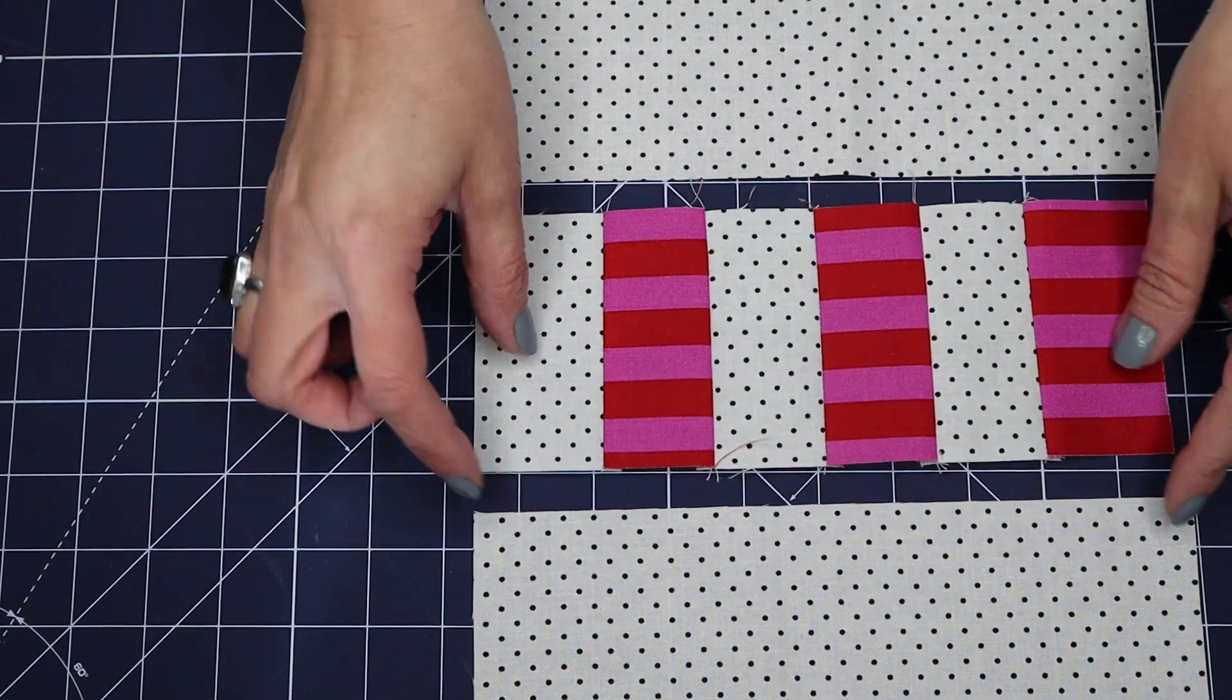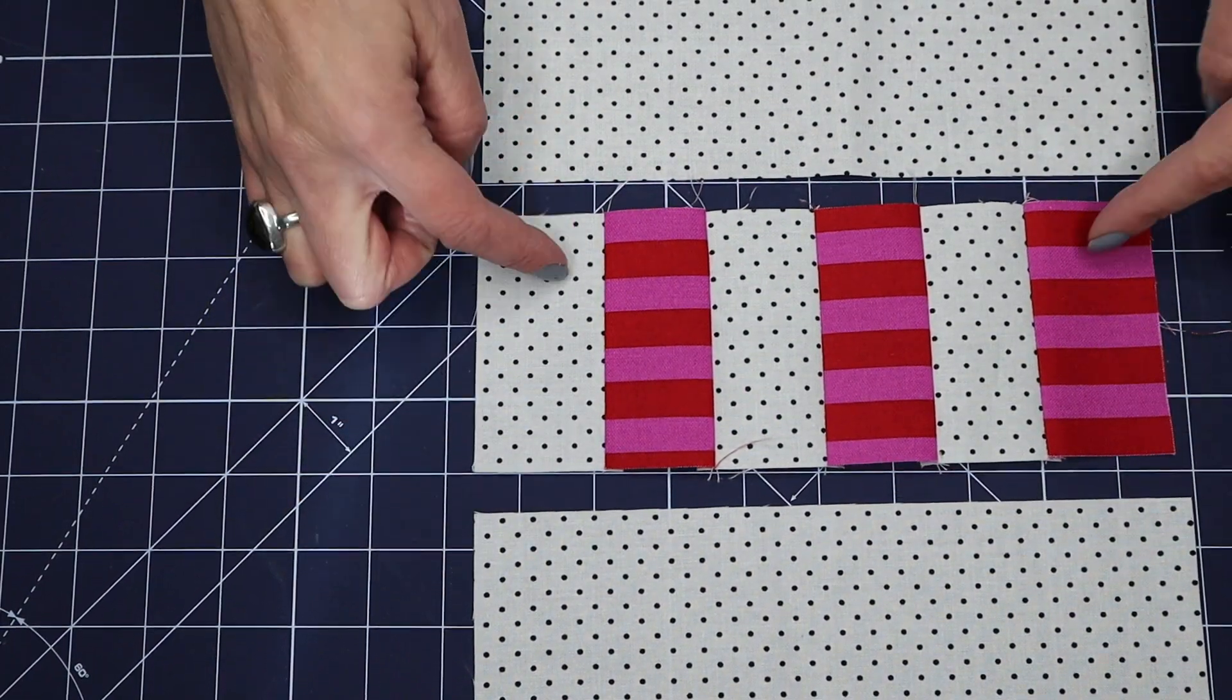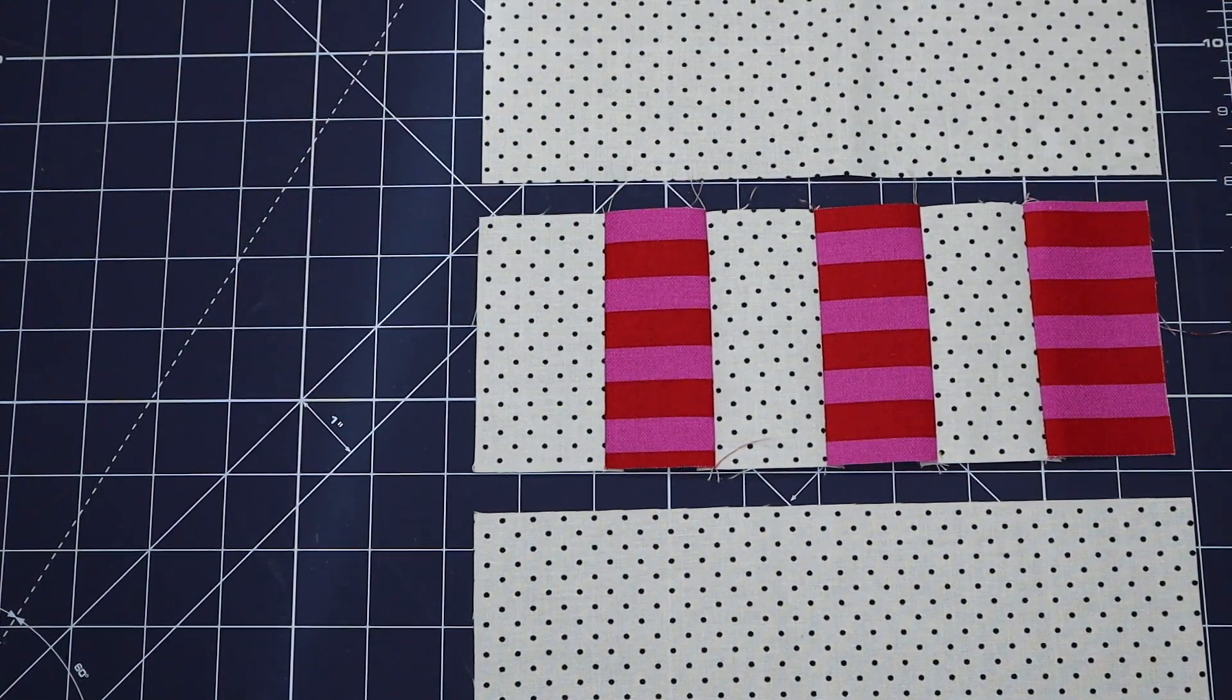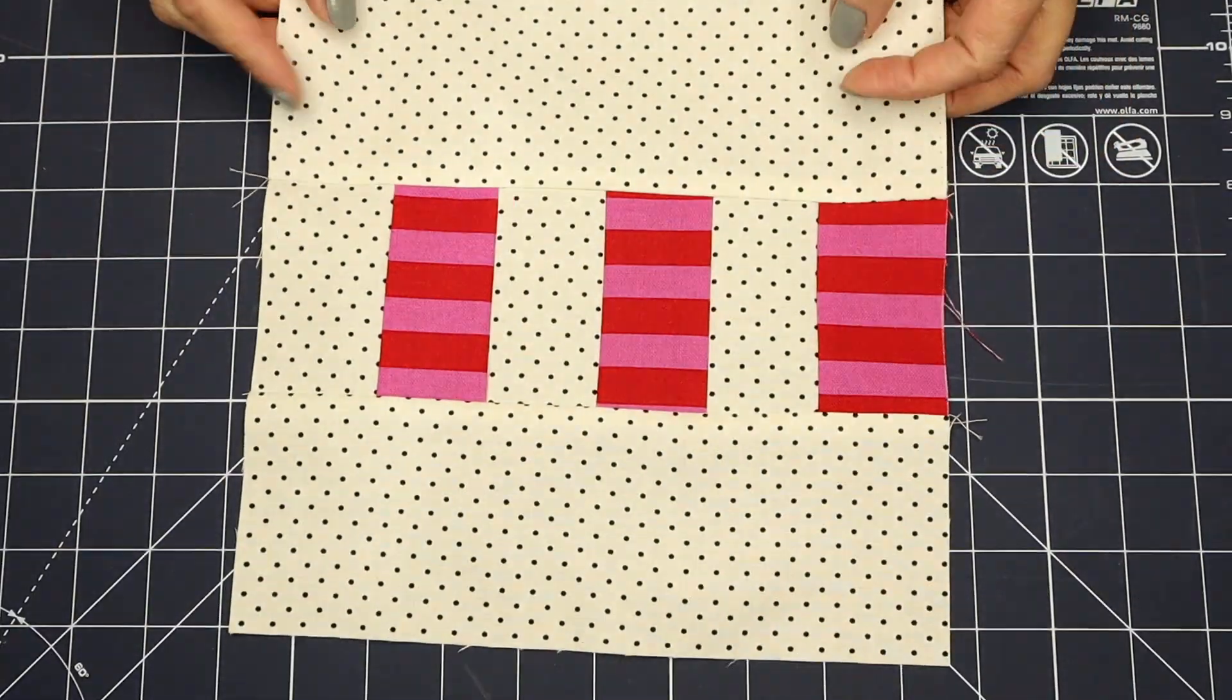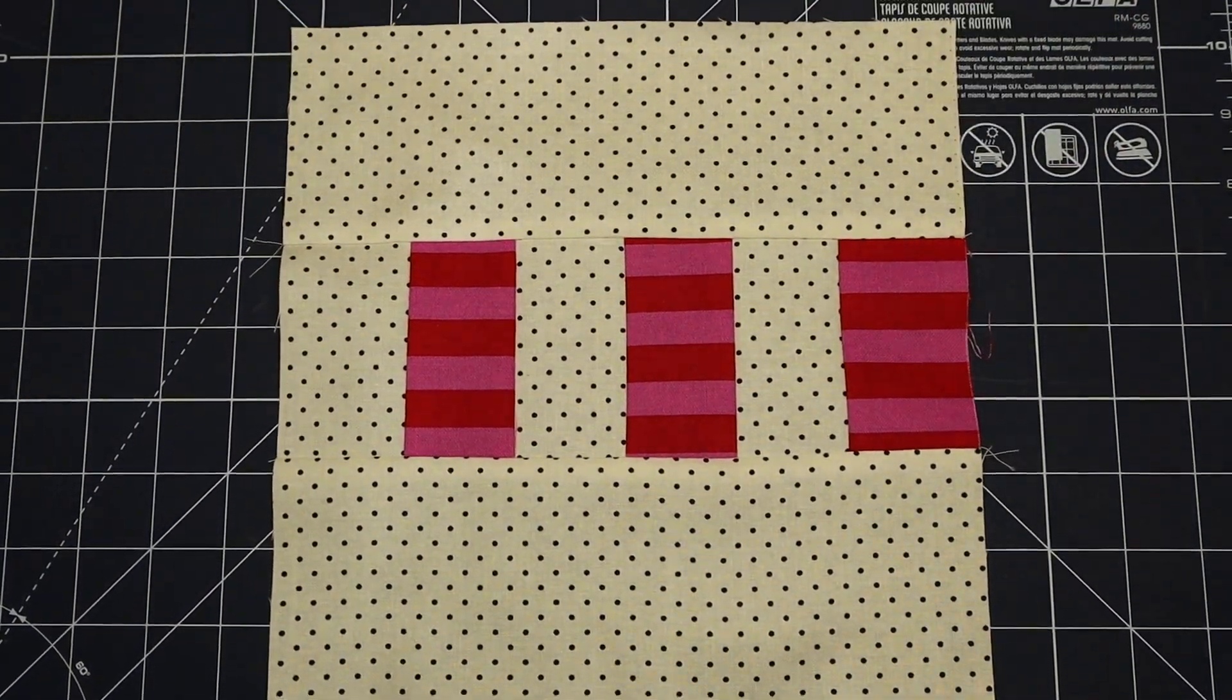So now all that's left to do is attach these two larger rectangles to the pieced unit. All right. There is our finished block.